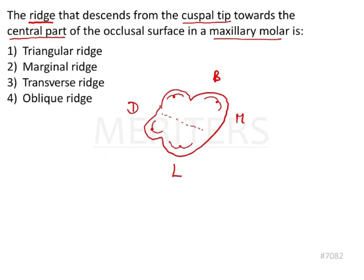Now this is seen on the mesial buccal cusp. From the cusp tip, if we reach to the center of the occlusal surface, there will be an elevation. Another elevation starts from the mesial lingual cusp tip and reaches to the center of the occlusal surface. Interestingly, the mesial lingual cusp has two such elevations — one meeting with the triangular reach of the buccal and lingual cusp, and one meeting with the distal buccal cusp.